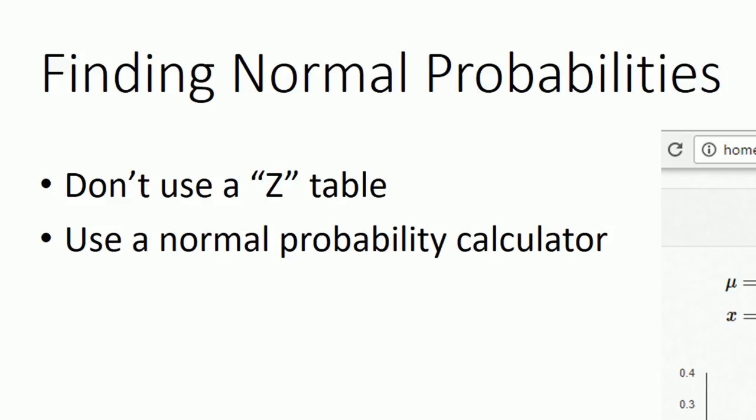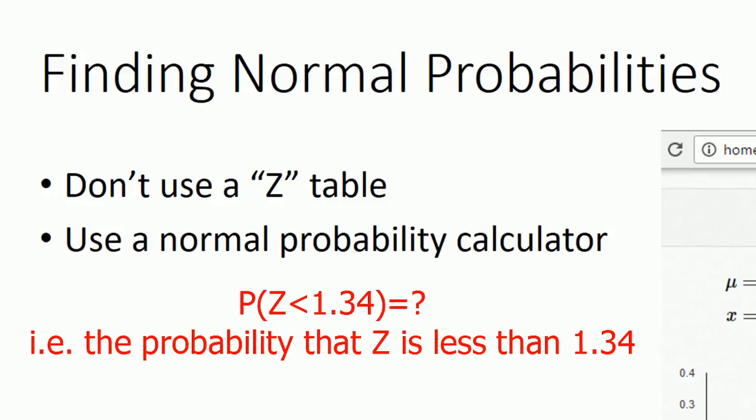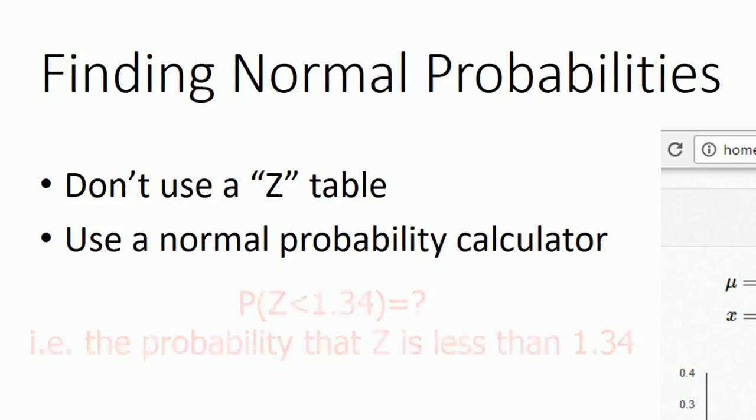Okay, now one task you'll be asked to do is to calculate normal probabilities, and you'll be asked to do something like this. You have a standard normal random variable. What is the probability that it takes a value less than 1.34? And the old school way of doing this is to get a piece of paper called a z-table and look it up in there. This is really very archaic, and I really don't want you to be looking at z-tables. There are much more efficient and precise methods available.